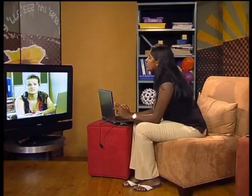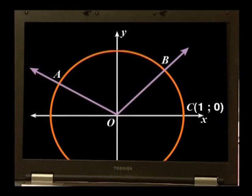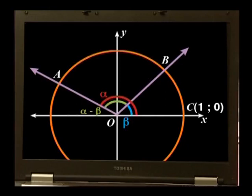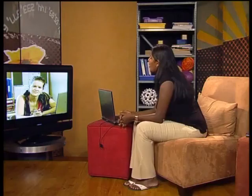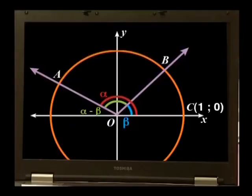Sounds complicated. Not if you take it one step at a time. In this sketch, angle AOC is called alpha, marked in red. Angle BOC is beta, marked in blue. Can you use alpha and beta to define angle AOB? Angle AOB will be alpha minus beta. Let's mark this angle in green. Because I've used a unit circle — a circle with a radius of 1 — the point C has coordinates (1, 0). Let's start with point A. A is on the arm of the angle, which we've called alpha minus beta.